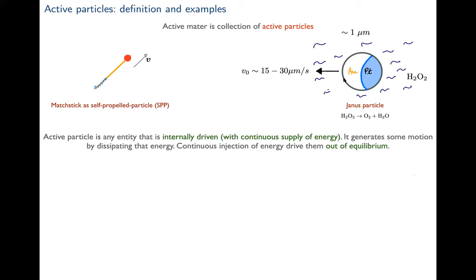Consider a match stick floating in water with surface tension forces acting on it. If you coat one end with soap — that blue patch — and place it on water, the surfactant creates a surface tension gradient, lowering surface tension locally. This creates an unbalanced force, and the particle moves. This is what I'd call a self-propelled particle, or SPP — my example of an active particle.